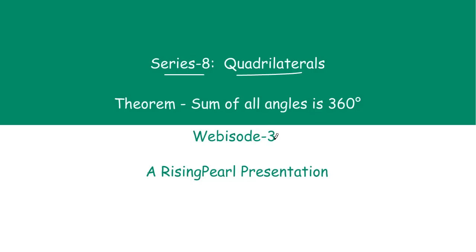Dostow, in our first webisode we talked about what is a quadrilateral, and in our second webisode we talked about different types of quadrilaterals. So today we are going to talk about the first theorem involving a quadrilateral — that is, the sum of all angles is 360 degrees.